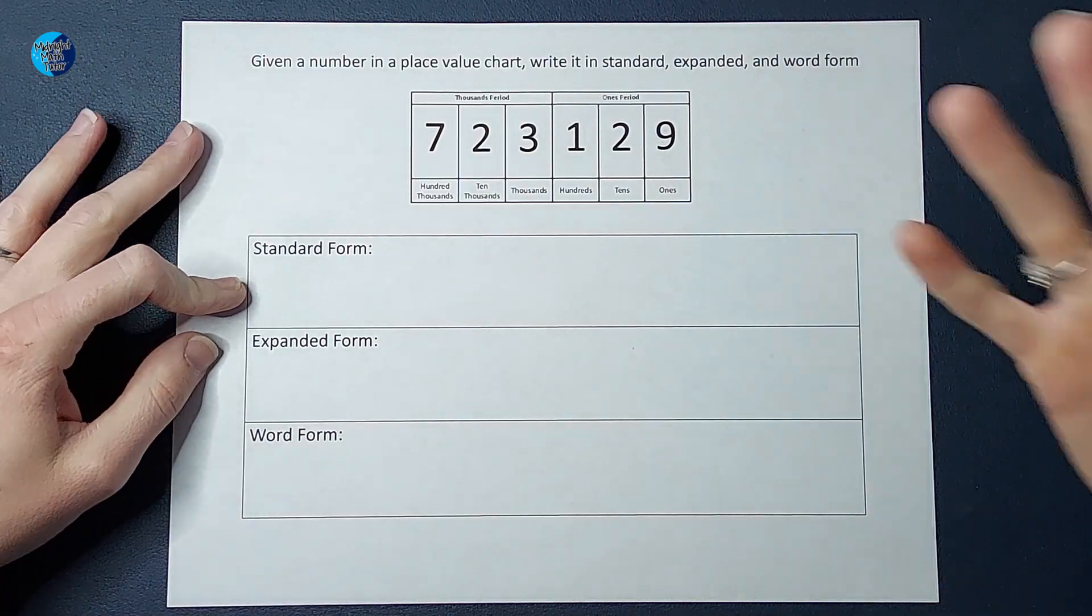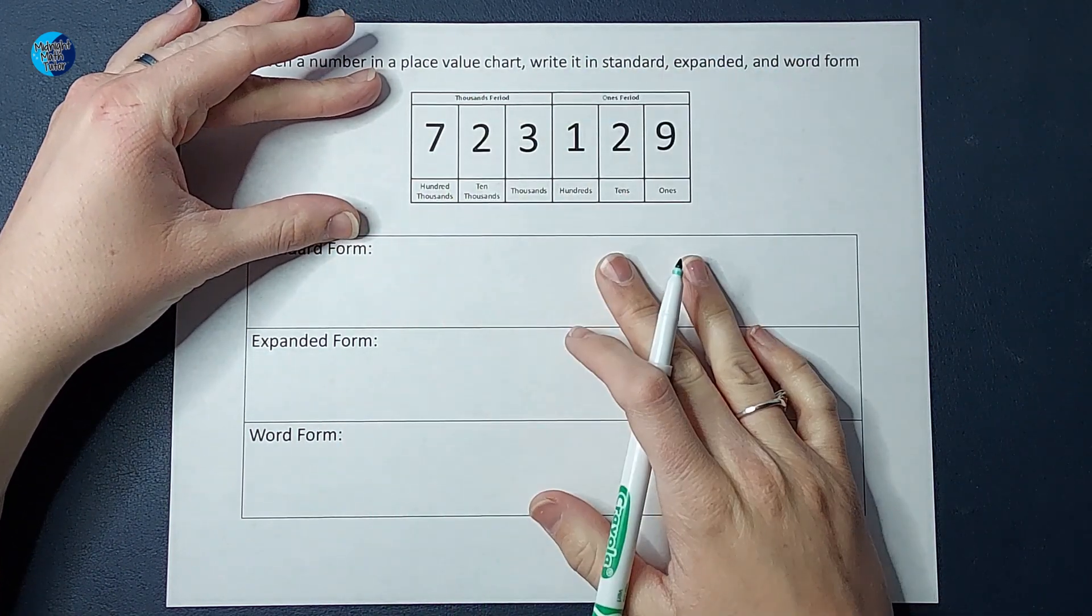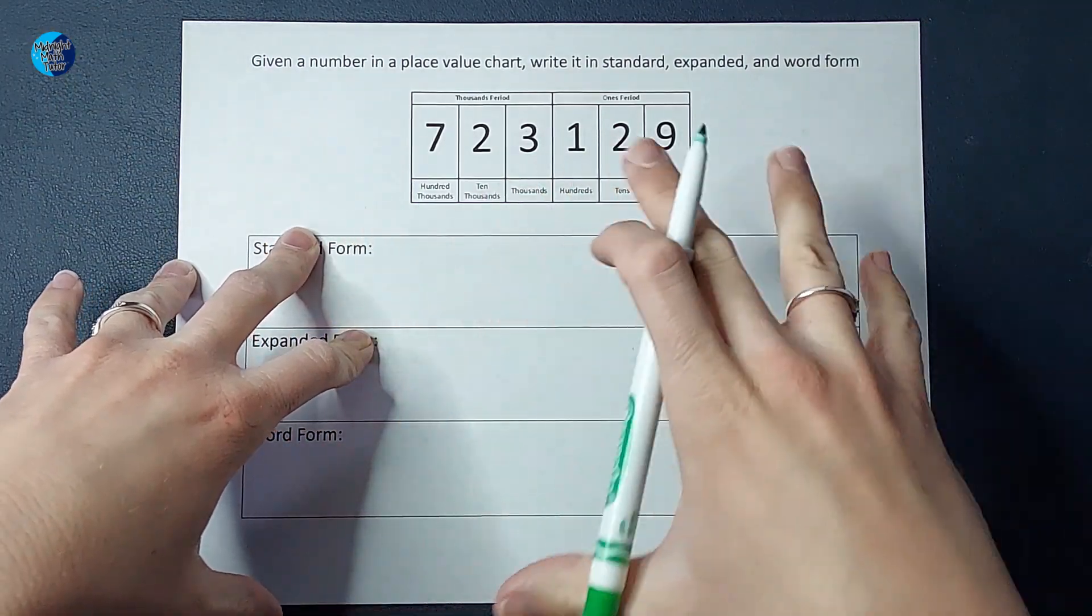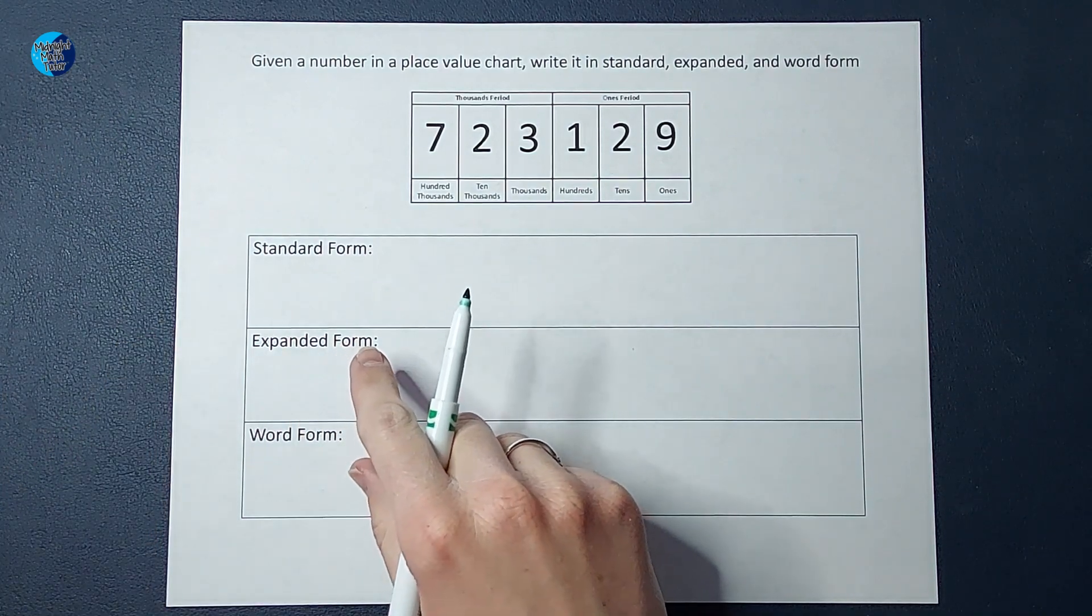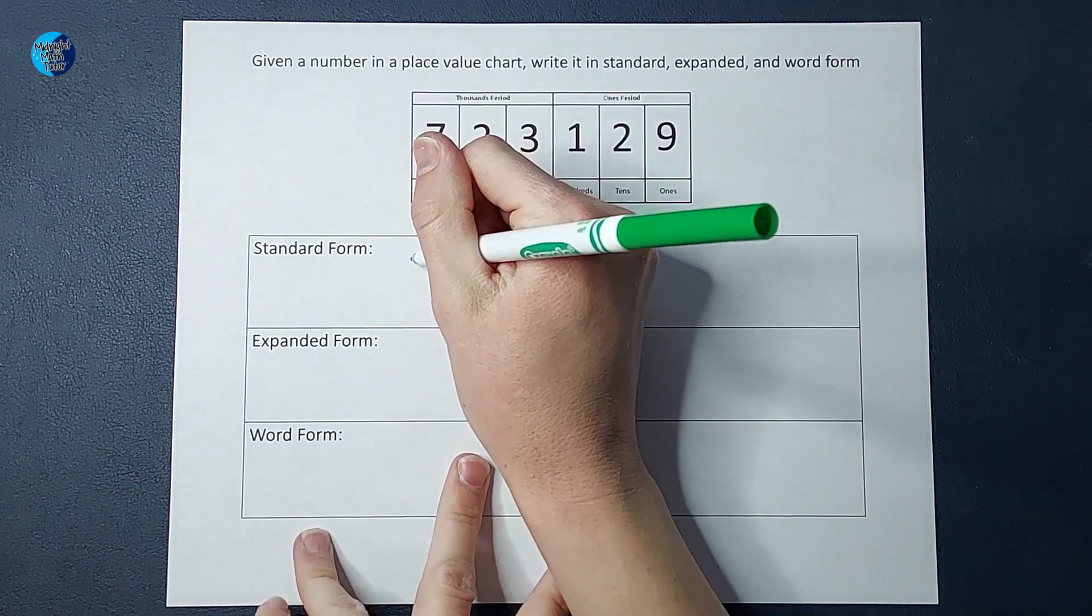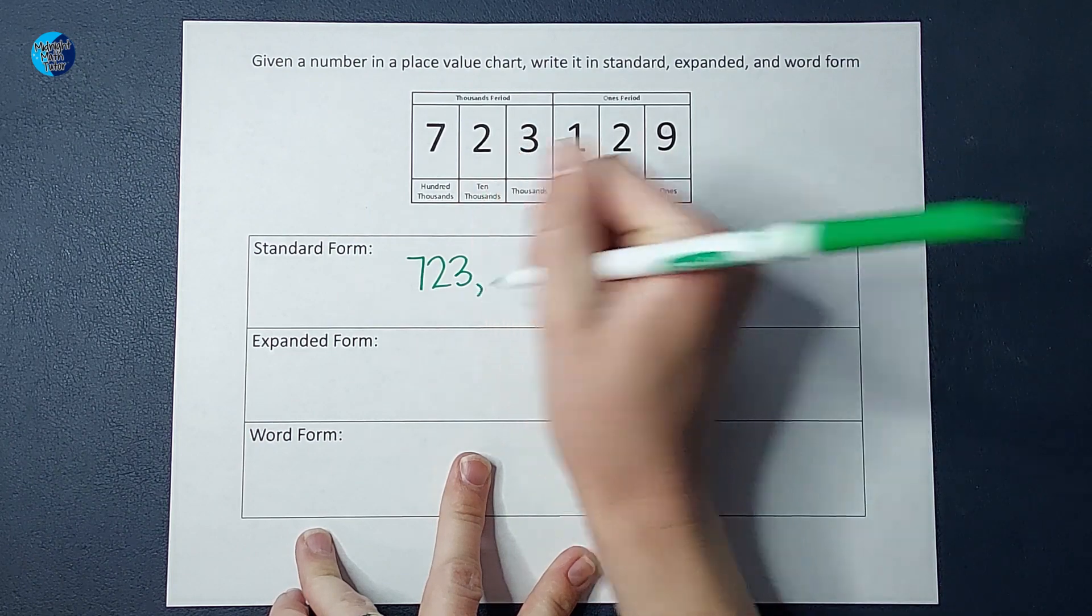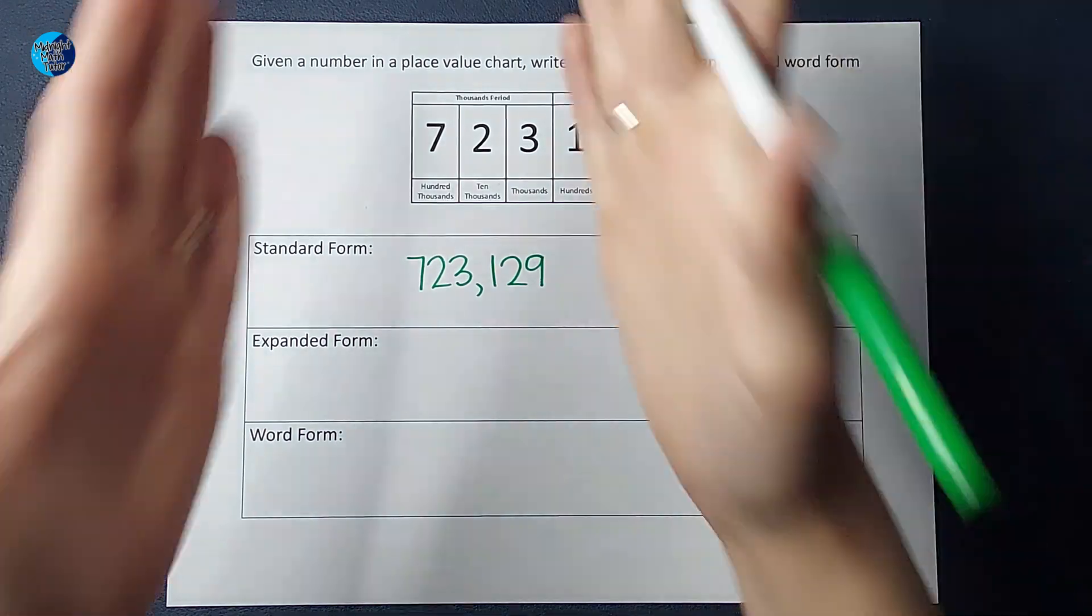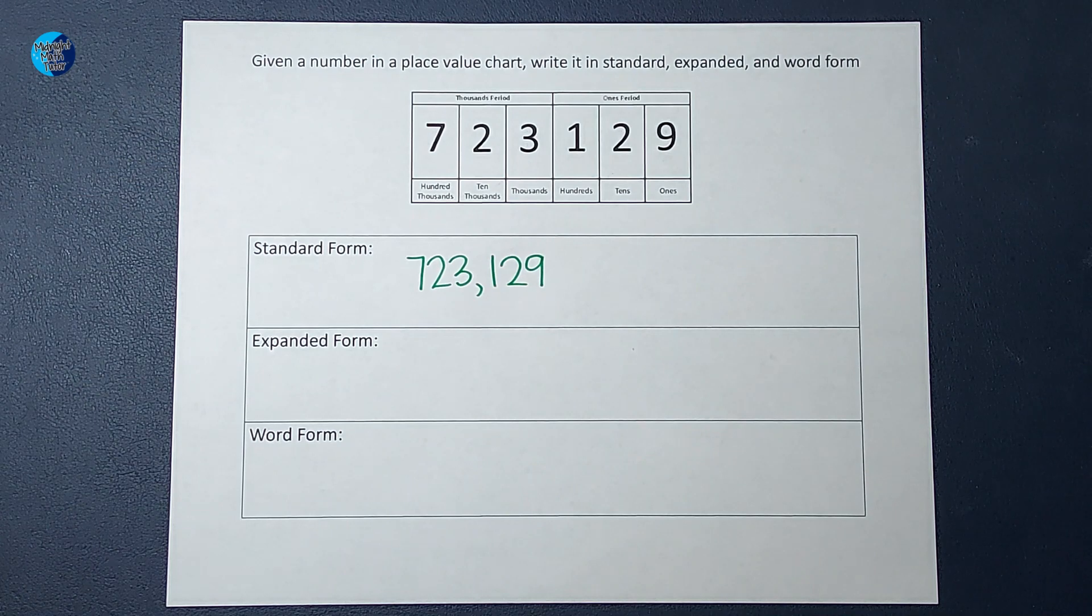Standard form is just how we normally see numbers. We don't see on our bank statements a little chart like this, right? This place value chart is to help our students understand what each of these places mean, but that's not how we see numbers in the real world. We see them in standard form. So standard form is just how you are used to seeing numbers: 723,129. We break them up in these sets of three. So that is what standard form is.